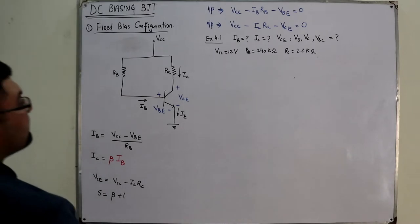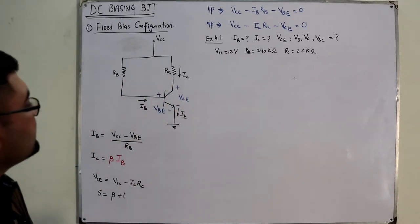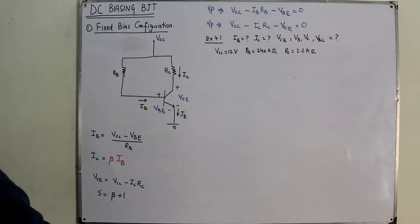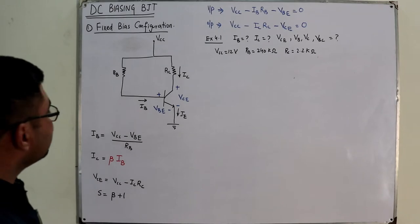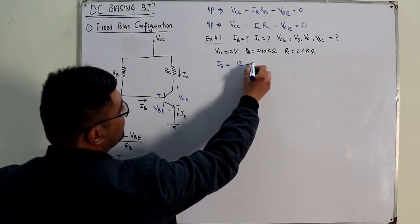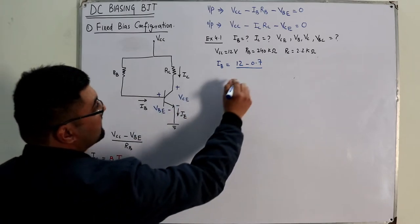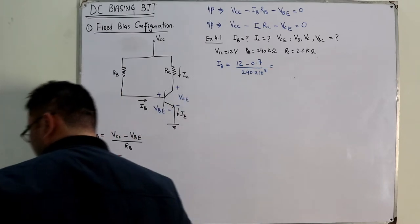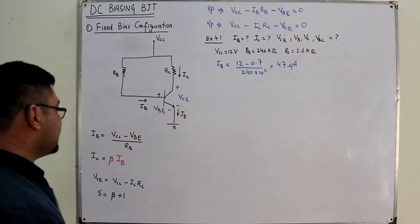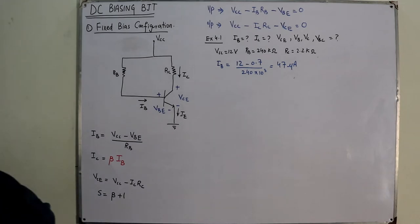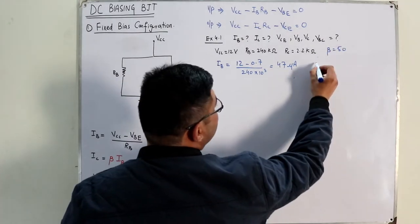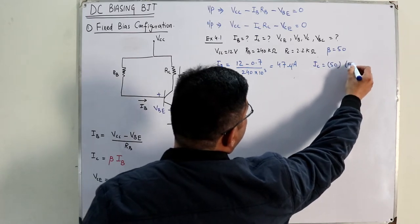You can apply KVL directly — these are very simple things. IB = (VCC minus VBE) divided by RB. With VCC = 12V and VBE = 0.7V for a silicon transistor, divided by RB = 240 kilo-ohms, IB comes out to approximately 47 micro-amperes. IC is beta times IB, with beta = 50, so IC = 50 times 47 micro-amperes.